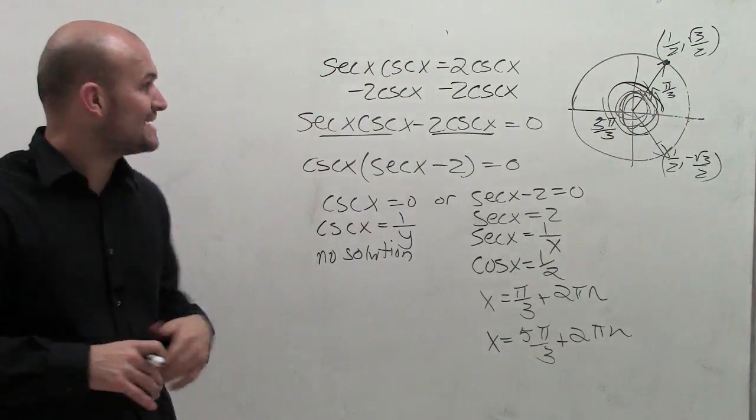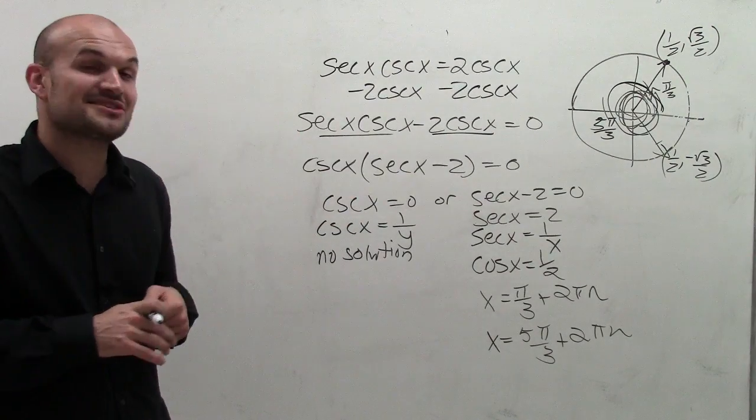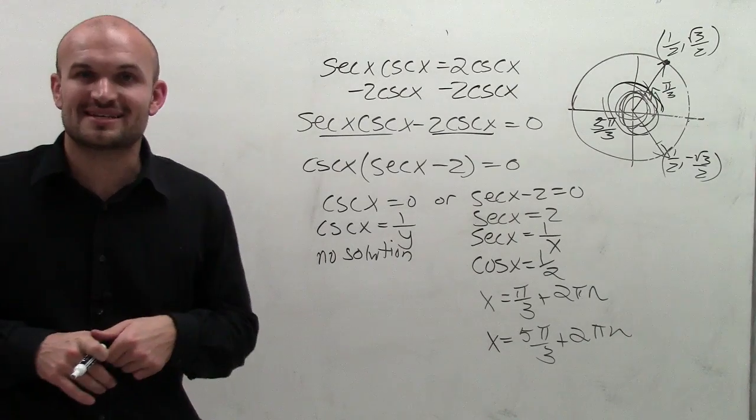So there you go, ladies and gentlemen. That's how you solve all your solutions for the equation secant of x cosecant of x equals 2 cosecant of x. Thanks.